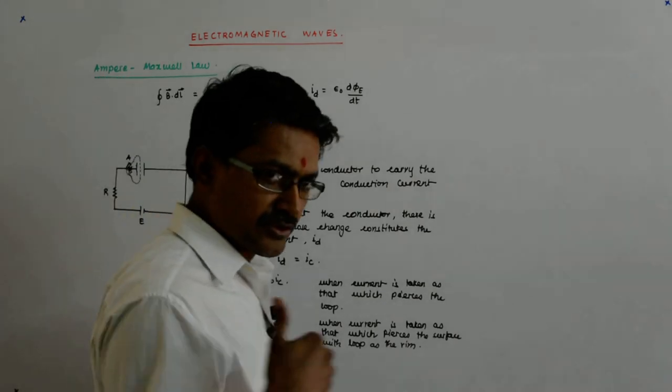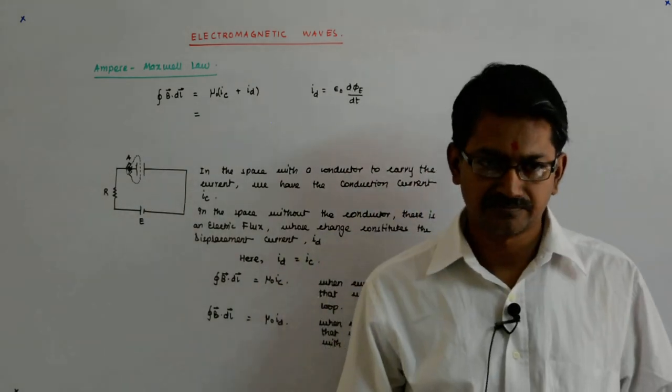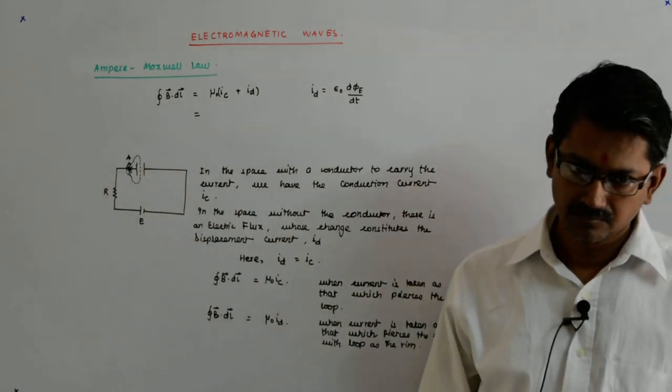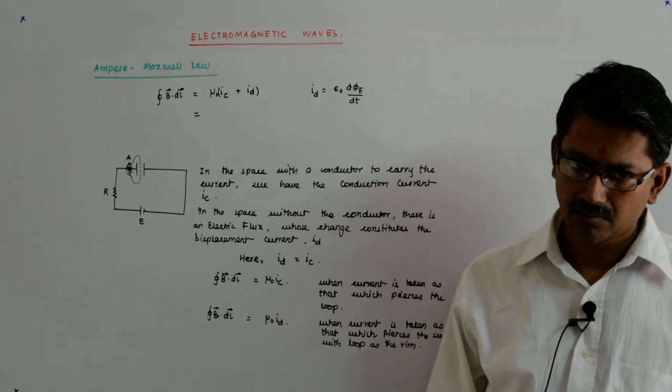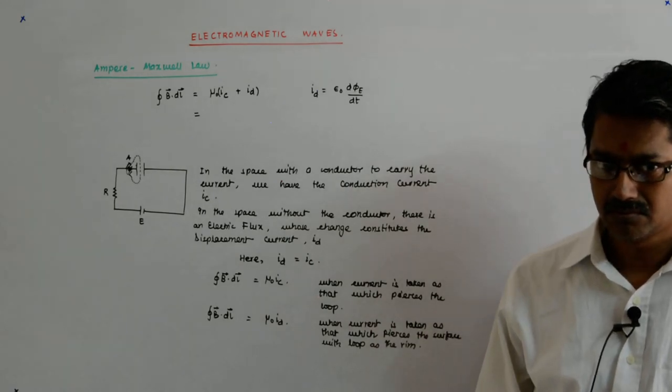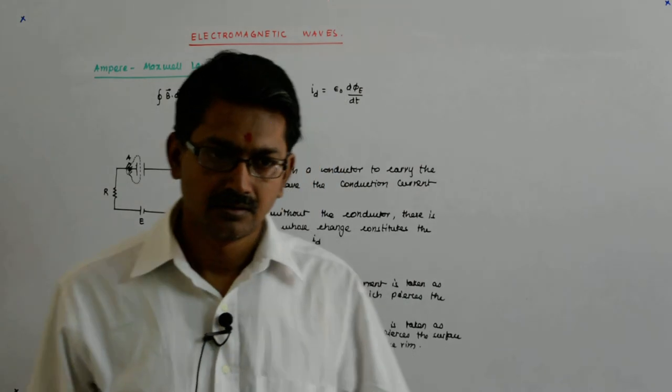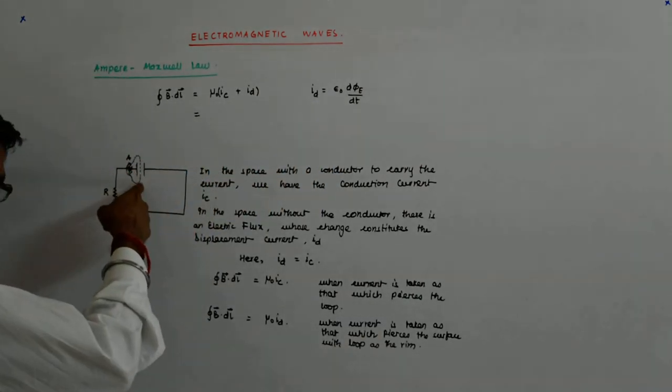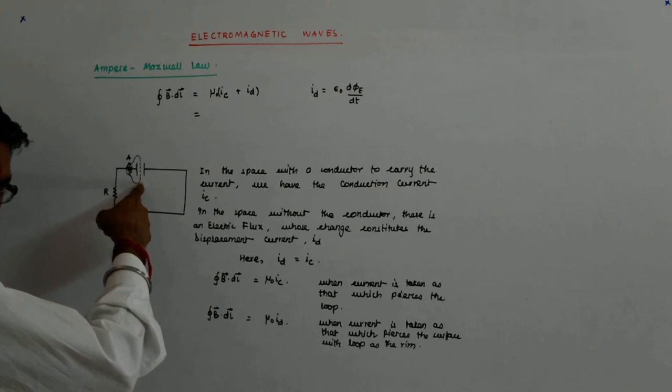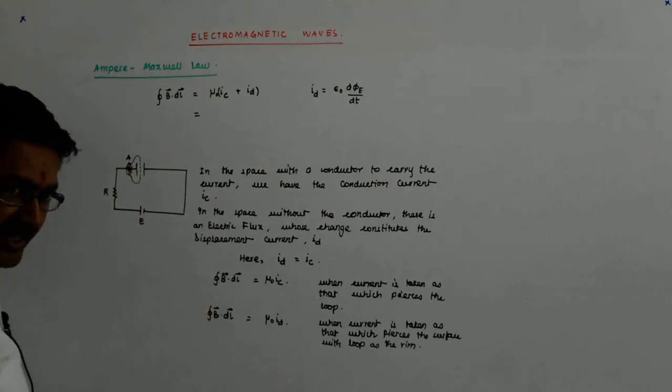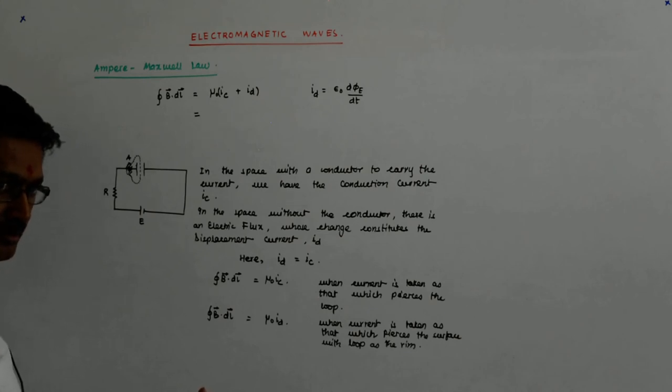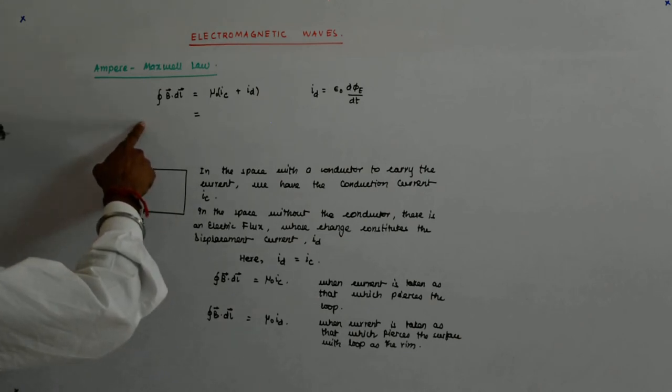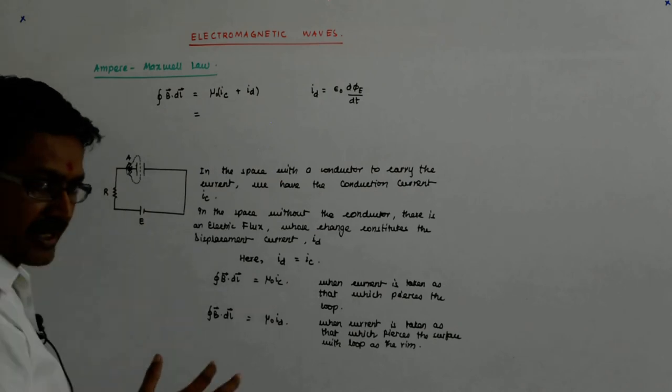If it is the continuation of the same thing. You cannot make it twice. Why? Because if you write twice IC, then again there is no IC here. If you write twice ID, then there is no IC. They are there but at different places.